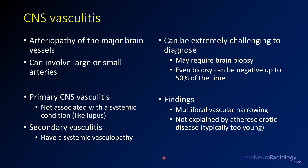CNS vasculitis is extremely difficult to diagnose — even biopsies can be required. Brain biopsies should try to obtain arachnoid surface or pia to visualize the vessels, but even those can be negative up to 50% of the time. The key finding is multifocal vascular narrowing not explained by atherosclerotic disease. Typically, these patients are too young to have the extreme vascular disease you'd otherwise expect to see.